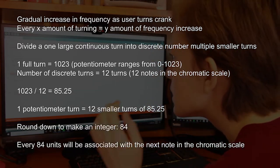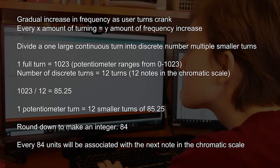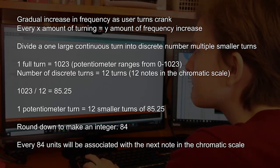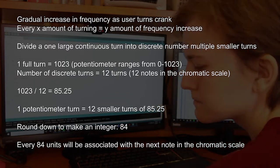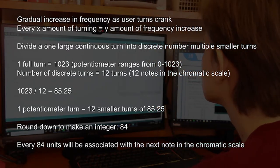I wanted to make this an integer so that it was easier for processing and I'm rounding down to about 84. This was close enough for our purposes. So every 84 units of turning of the potentiometer should be associated with the next note in the chromatic scale.